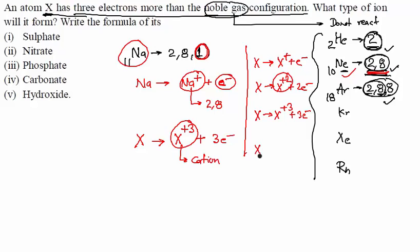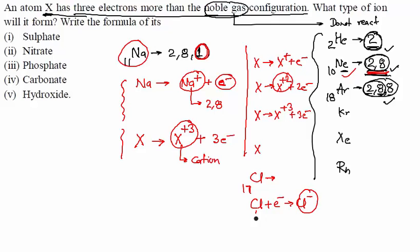However, if an element has seven more electrons than the nearest noble gas configuration — like chlorine — it will not lose seven electrons. Instead it will gain electrons to achieve the noble gas configuration, forming an anion. Chlorine's configuration is 2,8,7; it gains one electron to form Cl⁻ with configuration 2,8,8, which is argon.